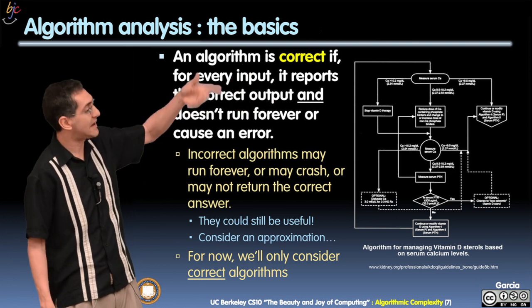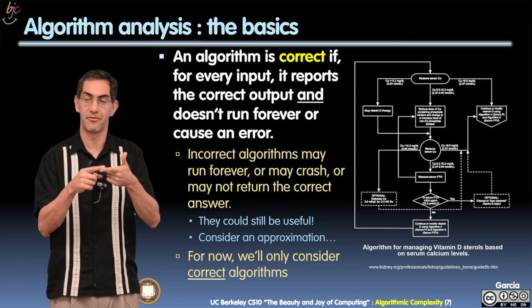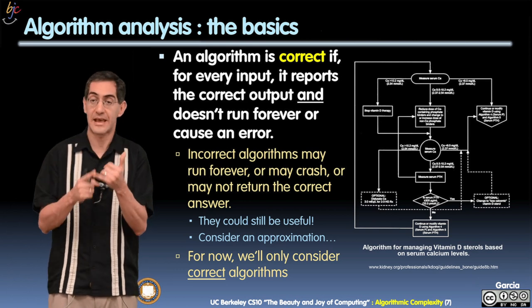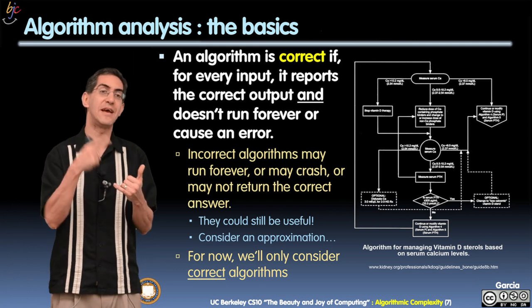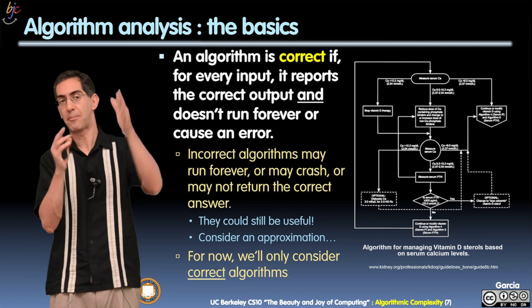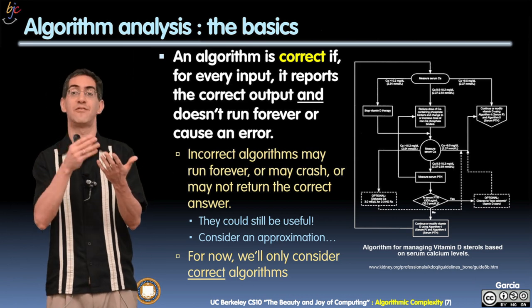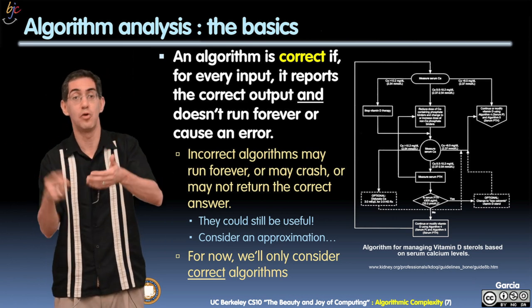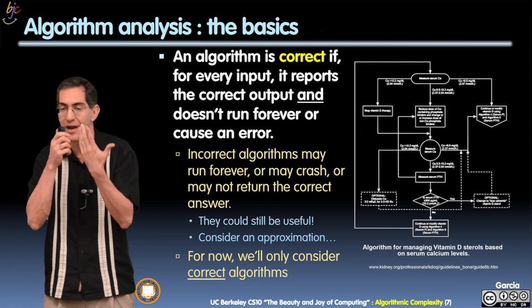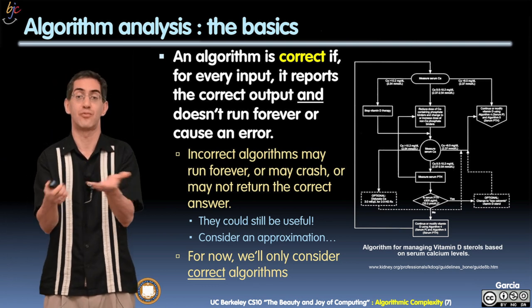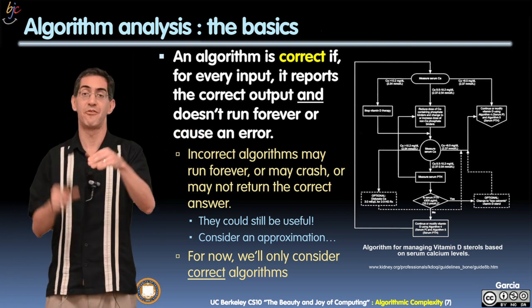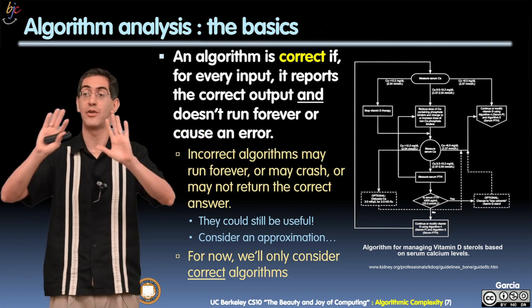So incorrect algorithms may run forever, may crash, and also may not return the correct answer. They could still be useful. Approximation algorithms could be really useful. I'll approximate the height of that building. That approximation may crash one out of every hundred times, it may run into an infinite loop one out of every hundred times, and it may also be wrong. But it's still pretty good as a first guess. Google, can you translate this? It might not get the translation right, but it's pretty close. So even though it's not correct, it still could be useful.